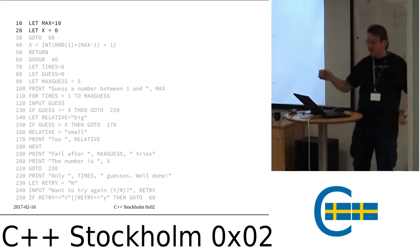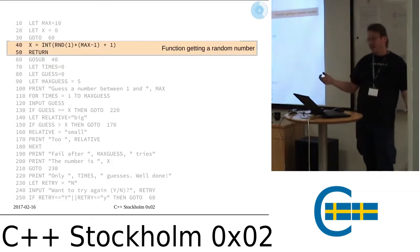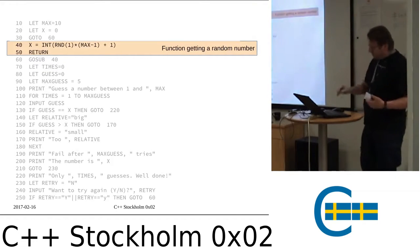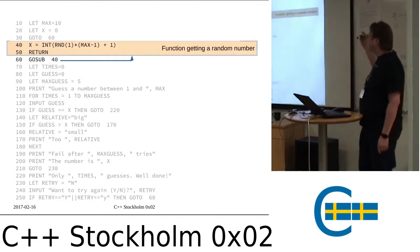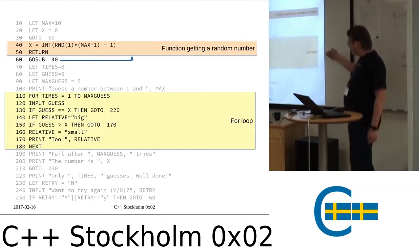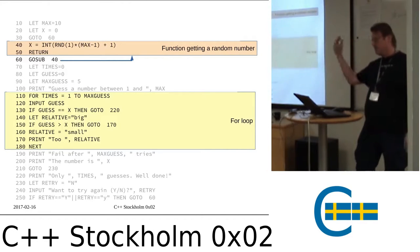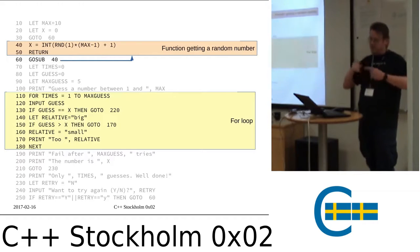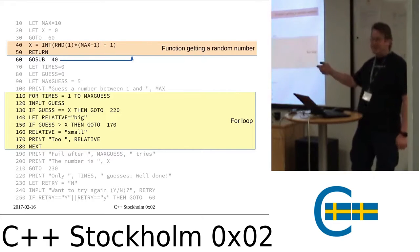Variable declarations — very, very intuitive. A function returning a random number, geniusly identified by the row number, so you know exactly where it is. A FOR loop — there's actually support for doing a step as well, so instead of going one, two, three, four, you can do one, three, five, etc. But it's simple. Everybody can understand this. I mean, eight-year-olds could understand this in the 80s.